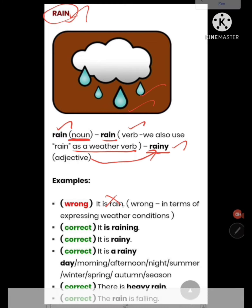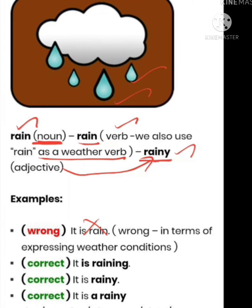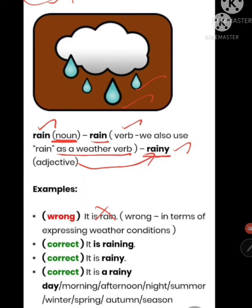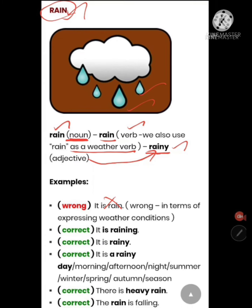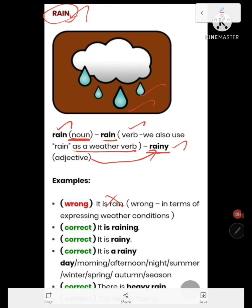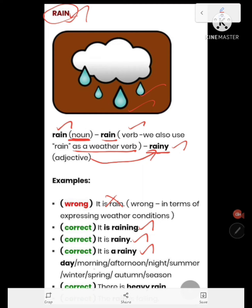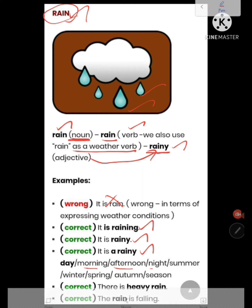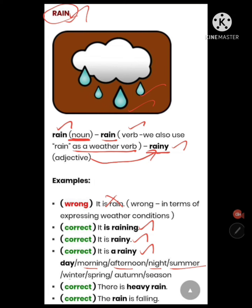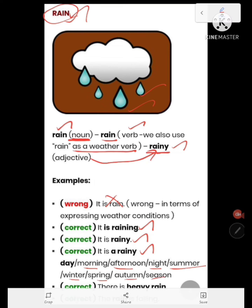Saying 'it is rain' is wrong when expressing weather conditions. We should not say that. We have to say: 'It is raining,' 'It is rainy,' 'It is a rainy day,' 'It is a rainy morning,' 'It is a rainy afternoon,' 'It is a rainy night,' 'It is a rainy summer/winter/spring/autumn season,' etc. 'There is a heavy rain.' Also: 'The rain is falling' — here rain is used as a noun.